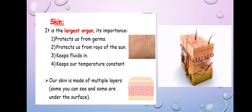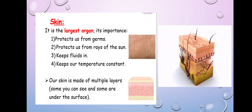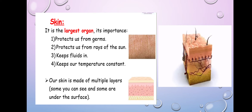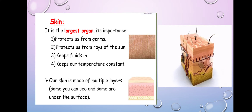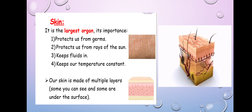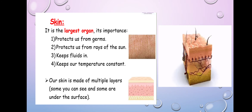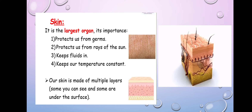Let's start with our skin. The skin is the largest organ. It covers all our body, so it's the largest organ. What is the importance of the skin? Number one, skin protects us from germs. You know COVID-19 — it enters our body through our eyes, mouth, and nose. They never said it can enter through the skin. So, our skin protects us from germs.